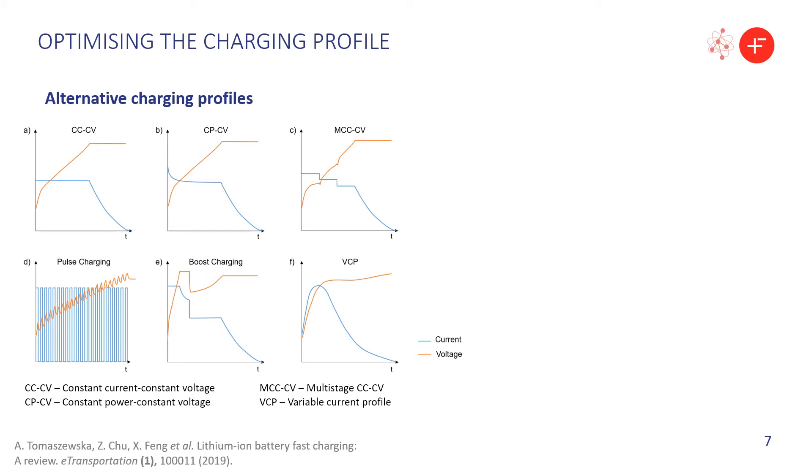So over the years, many alternative strategies have been proposed, and only a few types are shown here. For instance, a multi-stage constant current strategy, as well as boost charging, aim to maximize the current in the beginning of charging when the graphite anode is not yet saturated and plating is less likely. Pulse charging, on the other hand, can help disperse the concentration gradients by including rest or even discharge periods, but that does mean that the current of the charging pulse has to be even higher to achieve fast charging.